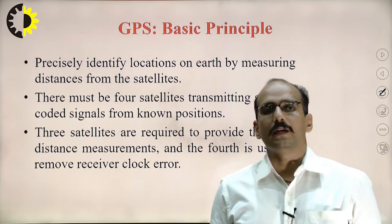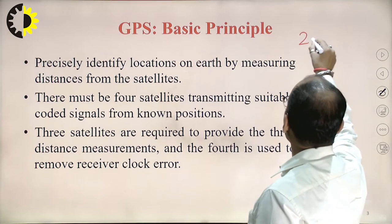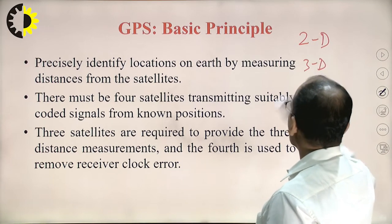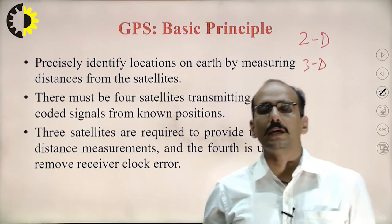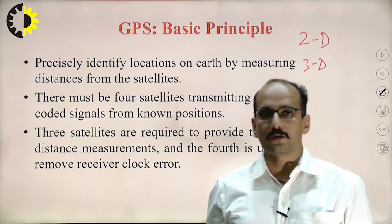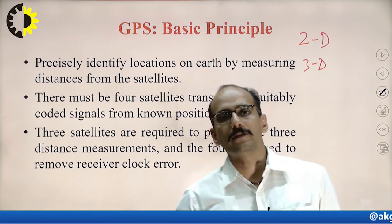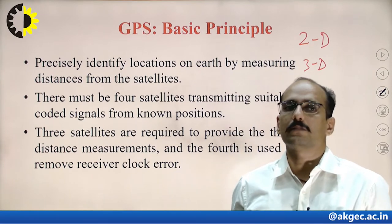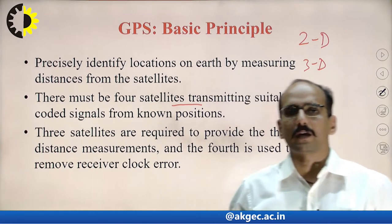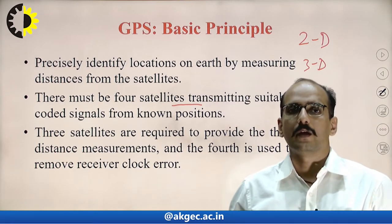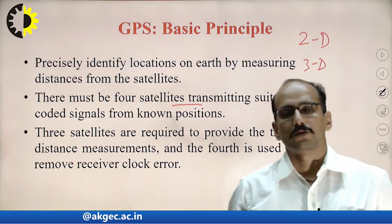GPS can locate information in 2D or 3D. For 2D positioning, 3 satellites are sufficient. But to locate or identify the 3D location of any system, there must be 4 satellites — 3 satellites provide the 3 distance measurements, and the 4th is used to remove the receiver clock error.